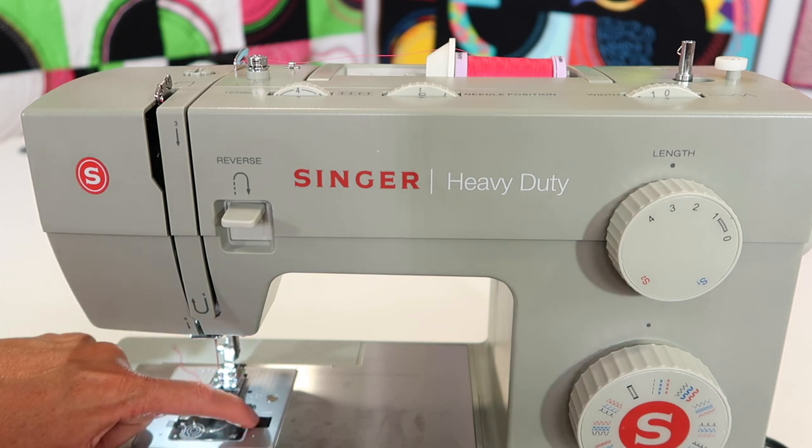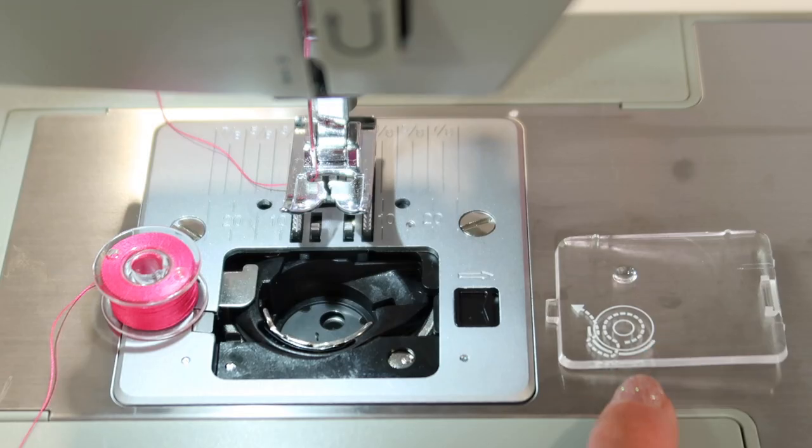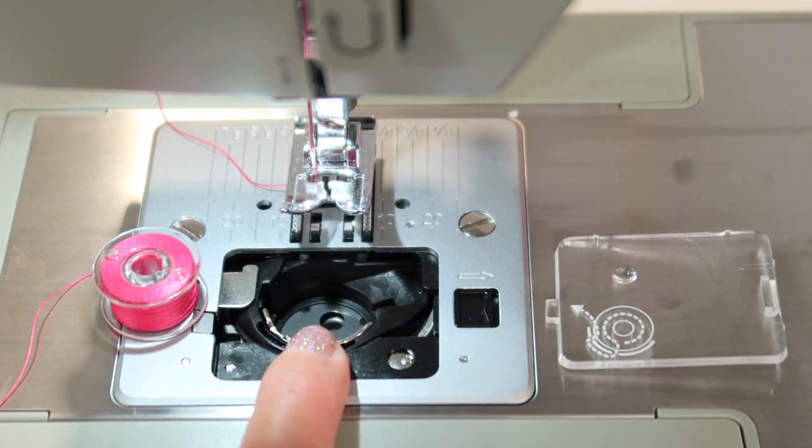Start by taking your finger and pushing the small black button to the right. That will take the door off. I do like on this machine that there's a little reminder of which way the bobbin needs to sit into the bobbin case.